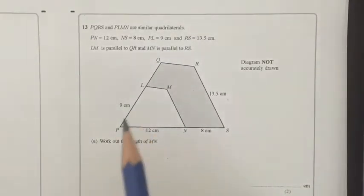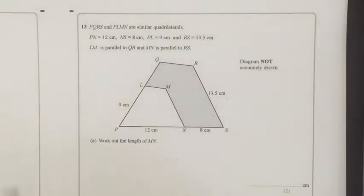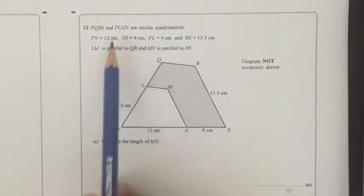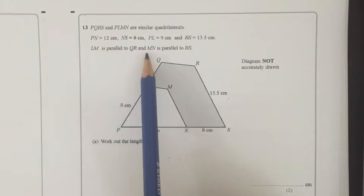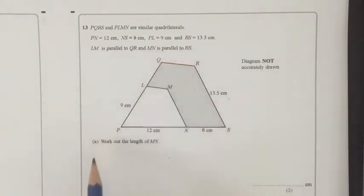Hey guys, I'm back. Last time we finished on question 12, now we're going to start on question 13. PQRS and PLMN are similar quadrilaterals. PN equals 12, NS equals 8, PL equals 9, and RS equals 13.5. LM is parallel to QR and MN is parallel to RS. Work out the length of MN.